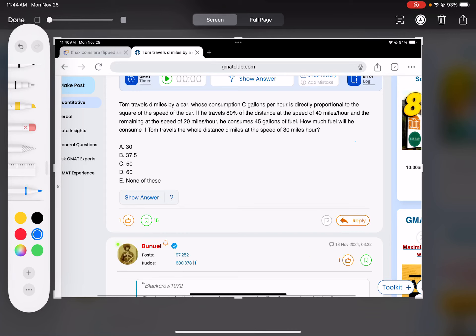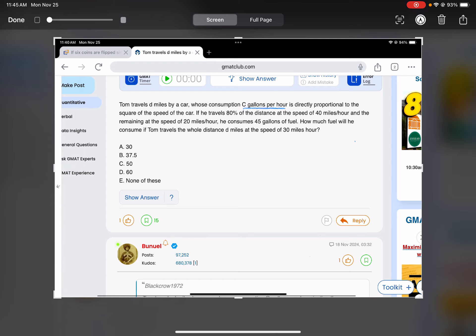Okay, this is a beast. First of all, they tell me a couple of things. Consumption C gallons per hour is directly proportional to the square of the speed of the car. So if it's directly proportional, it equals k times r squared. k is just the constant, it's direct proportionality. Something is always two times something else, something always three times something else. That k is two or three. It's just the constant that expresses the proportionality rate.